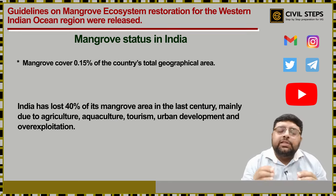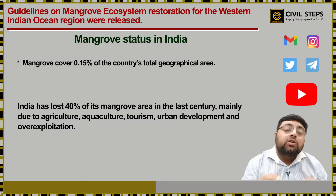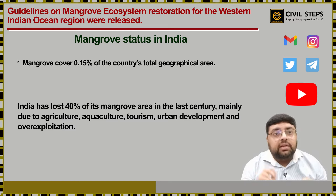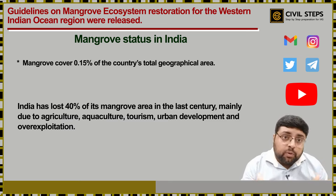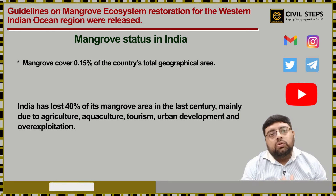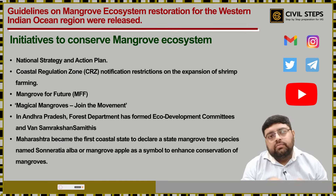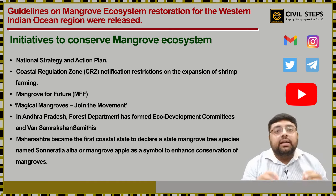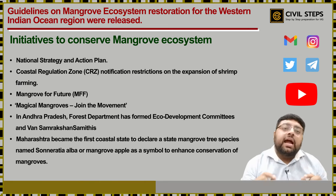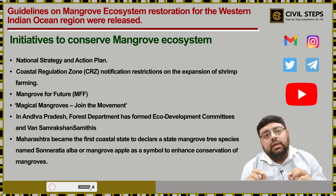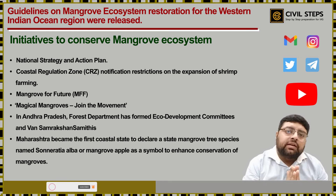In India, it has been found that we have lost 40 percent of our mangrove area in the last century, mainly because of agriculture, aquaculture, tourism, urban development, and over-exploitation. Seeing this, the Government of India has taken some initiatives. For example, India has drafted a National Strategy and Action Plan to sustainably mitigate the mangrove and coastal ecosystem.